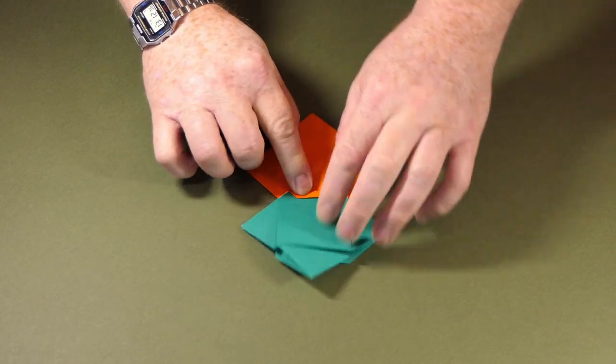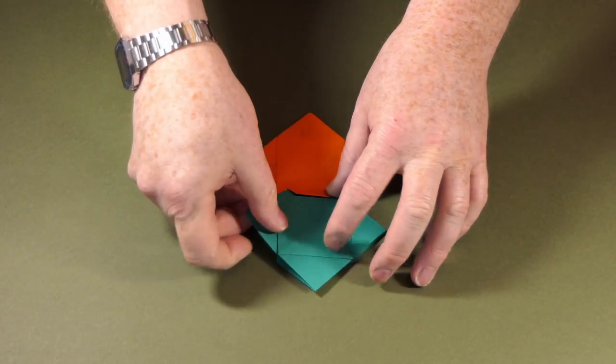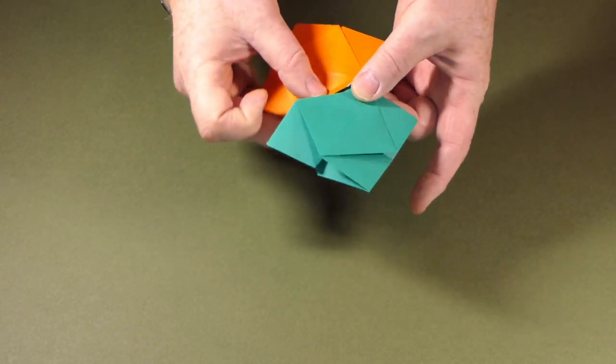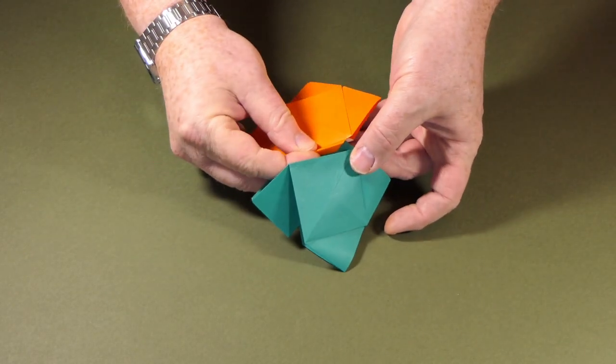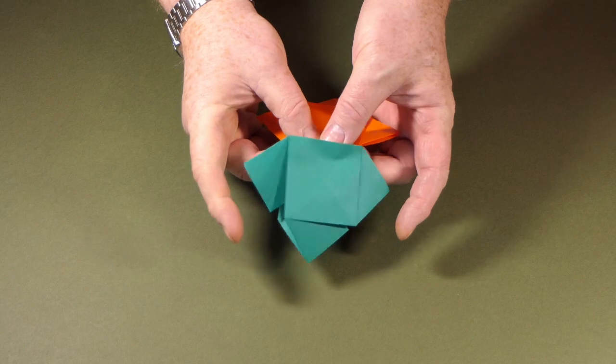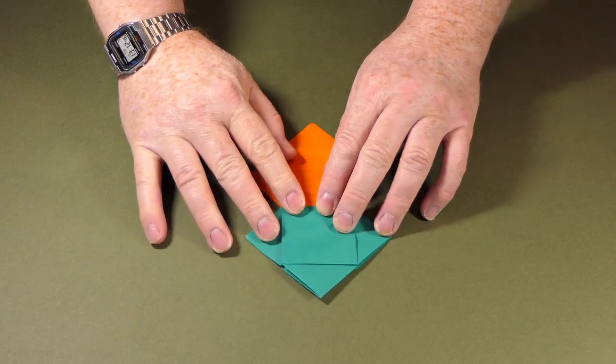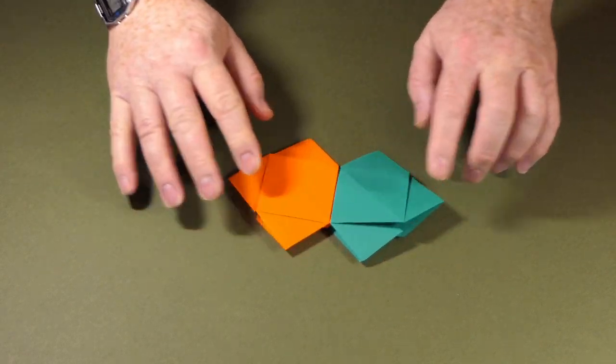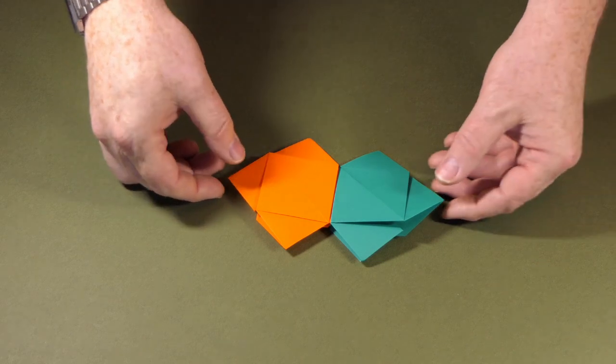But this final flap can tuck underneath the other module. So when we fold that over, it just tucks underneath. And that's how we link two of the modules together.